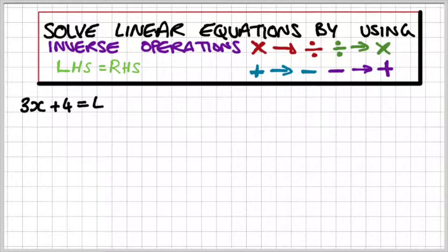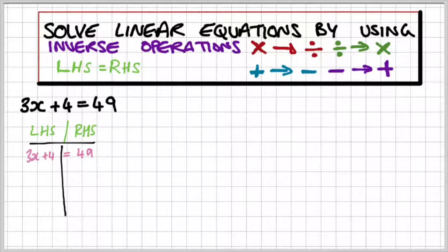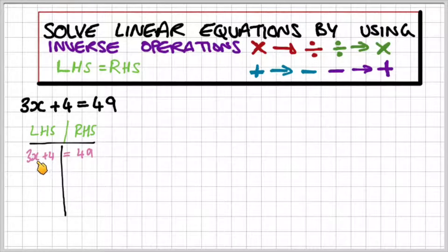So let's look at a linear equation: 3x plus 4 equals 49. We'll set up the left-hand side and the right-hand side. Now we're going to start using inverse operations. What I want to do is isolate the variable — I want to get the x on its own. We should start with whatever is furthest away from the variable and eliminate that.